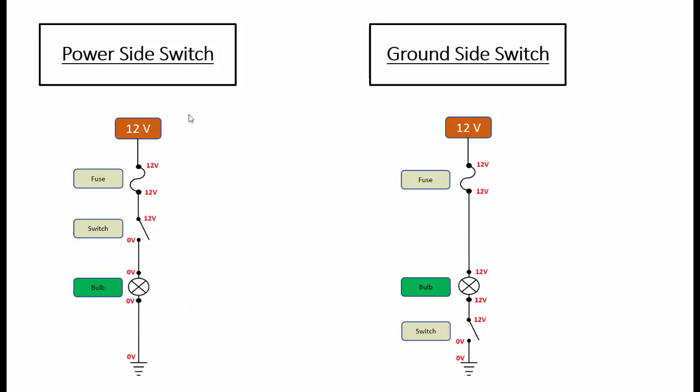Notice on the power side switch that you would have 12 volts all the way up until the actual tip of the switch, and the whole rest of the circuit, the bulb included, if you were measuring it when the circuit was off you would have zero volts.